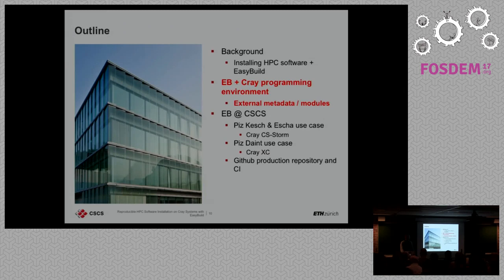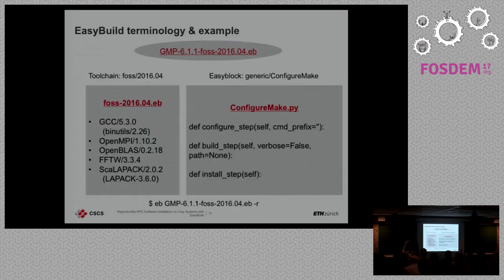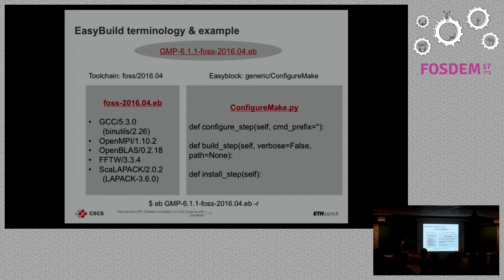Moving to the next part: the implementation for Cray, and what was missing to use EasyBuild on Cray systems. This is a typical example of an EasyConfig file — for a software called GMP, it relies on a toolchain with GCC, OpenMPI, and OpenBLAS, and it uses the ConfigureMake EasyBlock. Normally with EasyBuild you rebuild everything from scratch, including the toolchain, because you want to avoid using things already on the system to ensure reproducibility. The difference on Cray is that the programming environment is already there — since it's provided by Cray, we want to reuse the existing software because it has optimized scientific libraries and MPI optimized for the interconnect.